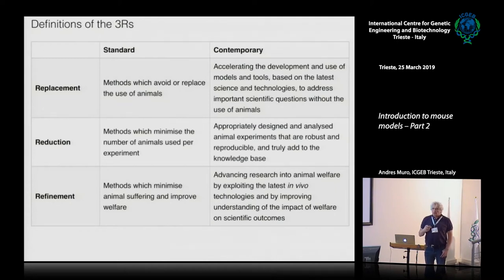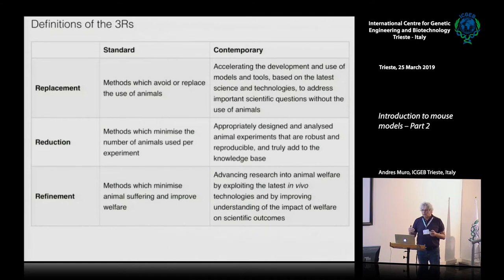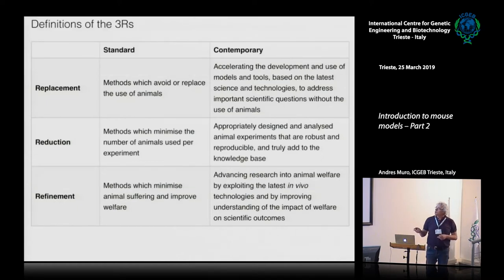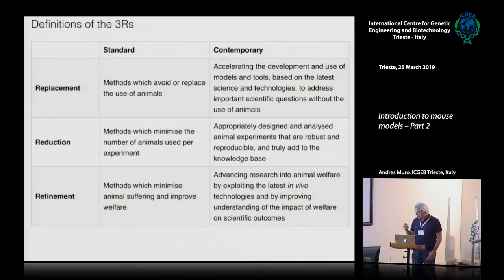The Three R's are not just definitions — they describe how to use animals in research. If we can, we should replace animals: for example, if you want to use cells, then instead of using animals, you should perform the experiment using cells. The idea is just not to use animals unnecessarily, and to reduce their use as much as possible.